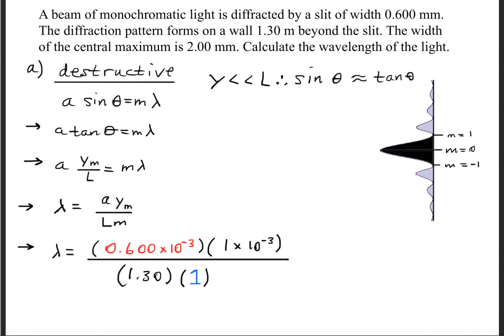When we make our substitution, we know that tangent theta is simply y sub m divided by L. And when we set that equal to m lambda, we'll rearrange and solve for the wavelength, and we'll plug in our variables.